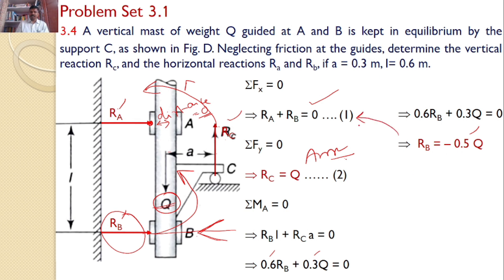Now, take equation 1. From equation 1, upon substituting this Rb in equation 1, I will get Ra equals 0.5Q. So these are the answers for this problem.